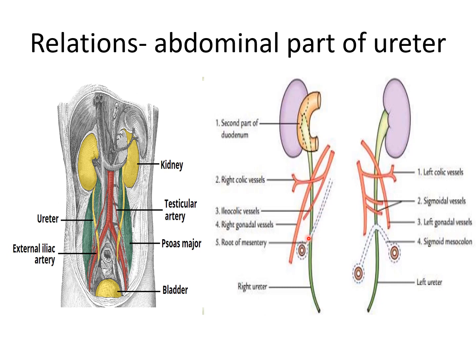On the left side, the left ureter is related anteriorly to the left colic vessels, sigmoidal vessels, left testicular or ovarian vessels, and sigmoid mesocolon.